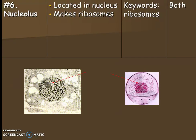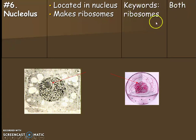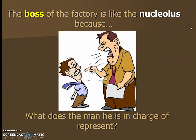Number six is the nucleolus. The nucleolus is located inside the nucleus — it's the eyeball-looking structure. It's actually more tightly wrapped DNA, and in that tightly wrapped area that looks like an eyeball pupil, ribosomes are made. The keyword here is 'ribosomes.' Both plants and animals have this organelle. We think of the nucleolus like the boss of the factory, since it's in charge of making those assembly line workers.